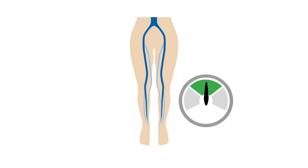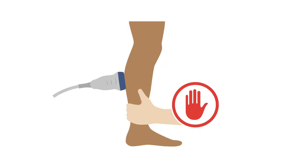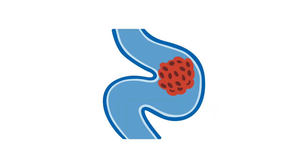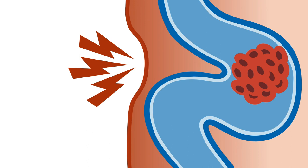Varicose veins grow to handle extra blood pressure and refluxing leg veins. As they are created and grow, varicose veins do not develop valves. Therefore, all varicose veins have reflux and do not need to be tested with augmentation. Varicose veins and the GSV and SSV can develop clots and should be tested with compression, especially in focal areas of pain, warmth, or redness.